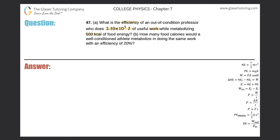So they're asking us for efficiency, so let's highlight the equation on the bottom right. The efficiency is equal to the amount of useful work put out by a system divided by the amount of energy that was put into that system. So what would be considered the useful work put out by this particular system called the professor?